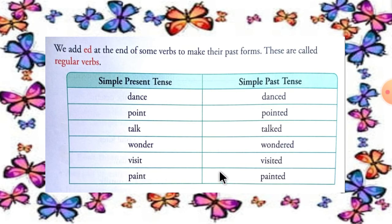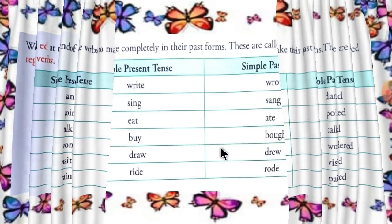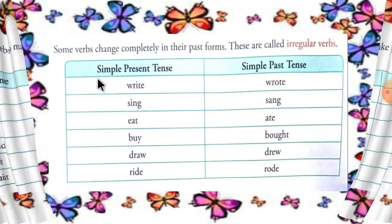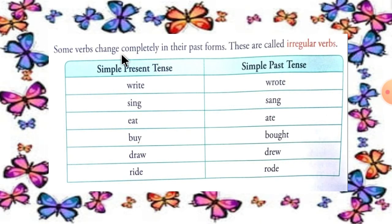Some verbs change completely in their past forms. These are called irregular verbs. Simple present tense and simple past tense: write — wrote, sing — sang, eat — ate, buy — bought, draw — drew, ride — rode.